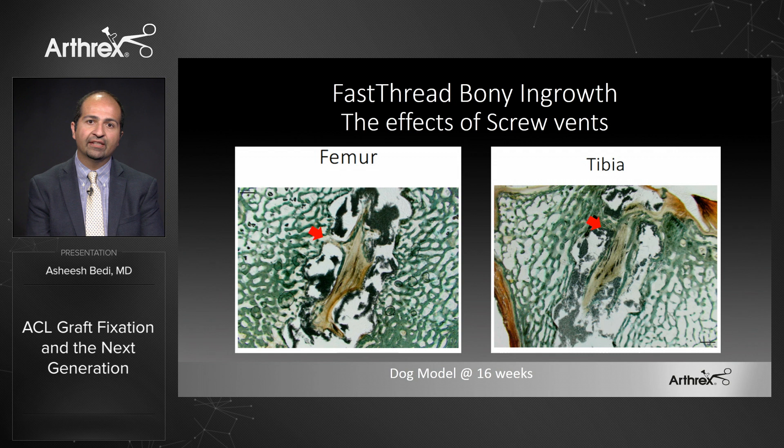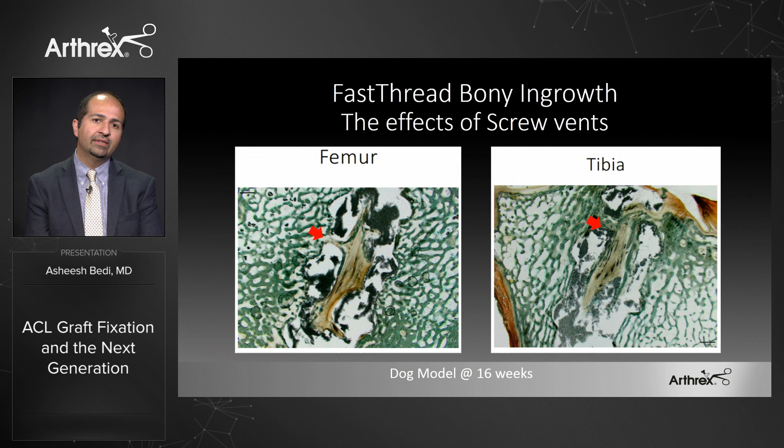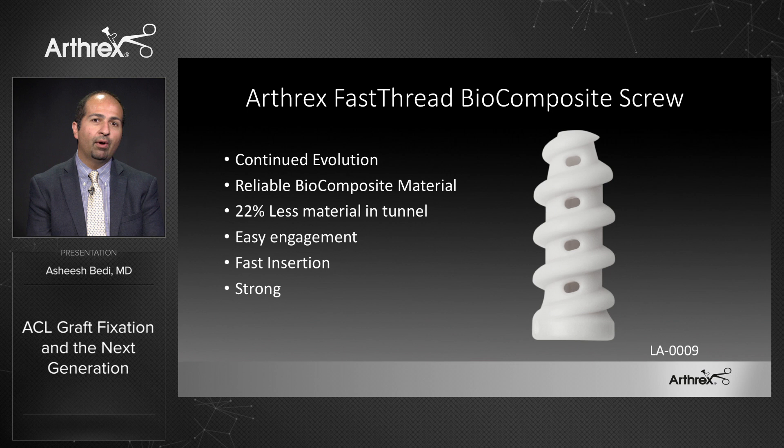Perhaps even more exciting is this dog model data — a dog tibia and femur at 16 weeks. You can appreciate the vents of the fast thread screws, which have allowed for bony ingrowth into the screw vents. This essentially creates bridges right across your screw-and-interface construct. These may not only contribute to mechanical strength but also contribute to our goal of preserving bone and minimizing foreign material.